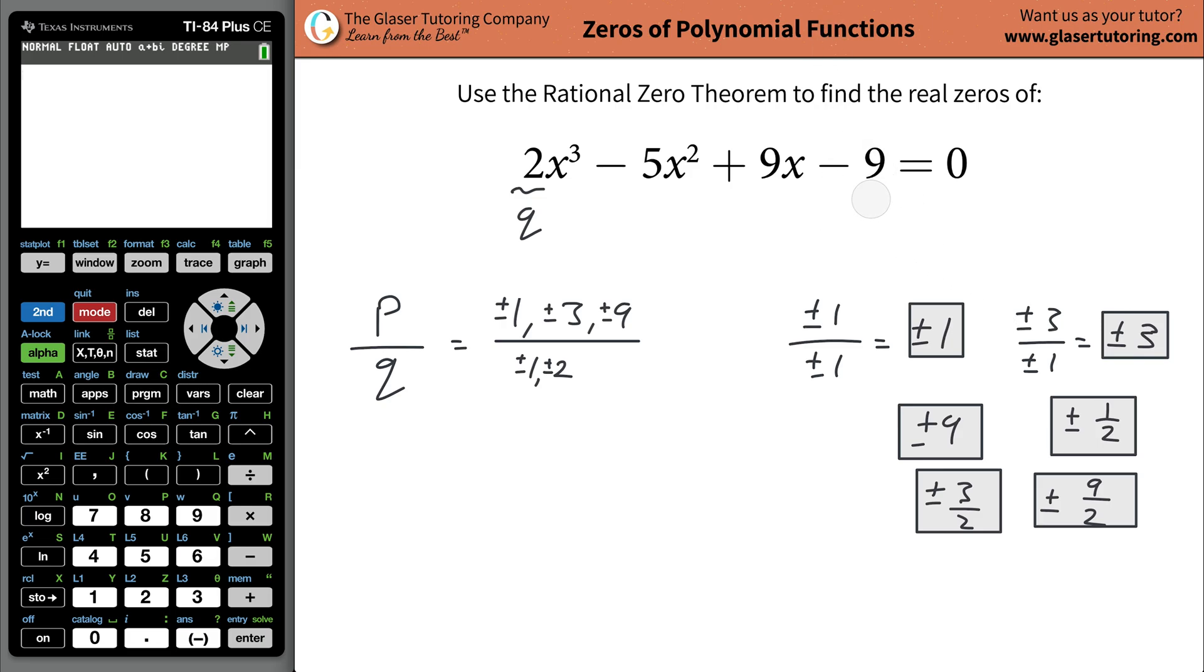So now what you'd have to do is, without using the calculator, you would have to take one of those 12, plug it in for x. Let's do 1 as an example. So 2(1)³ - 5(1)² + 9(1) - 9. If this equals 0, then the value you plugged in for x is a zero of the function. Remember, to find the zeros, they're asking what value of x gives the function value of 0. Does this work out? Well, let's do the math. This works out to be 2 - 5 + 9 - 9. This is not looking very good as far as it equaling 0.